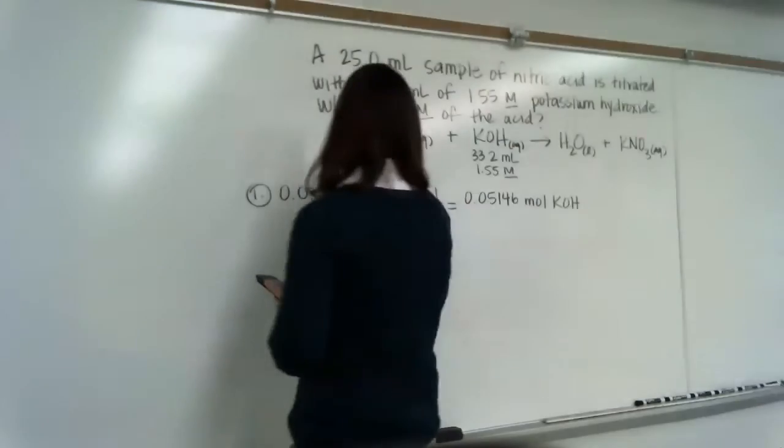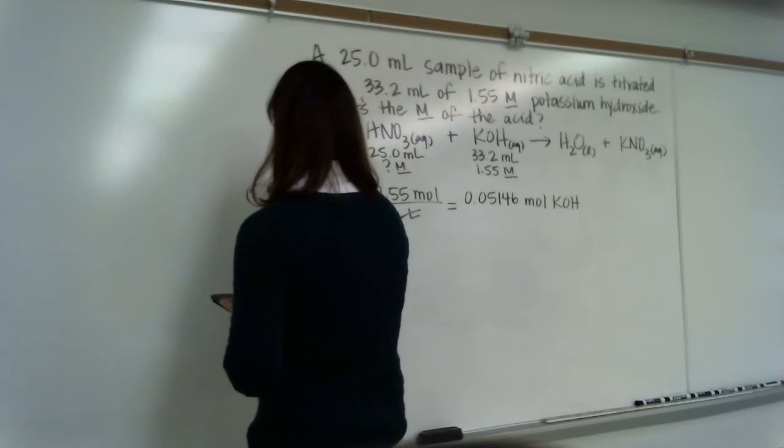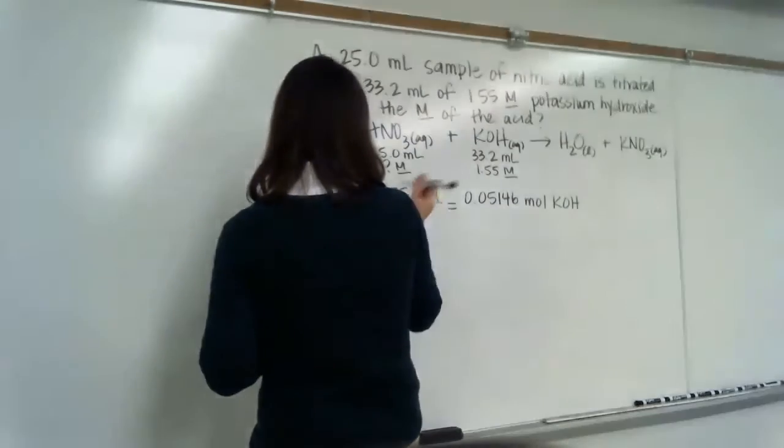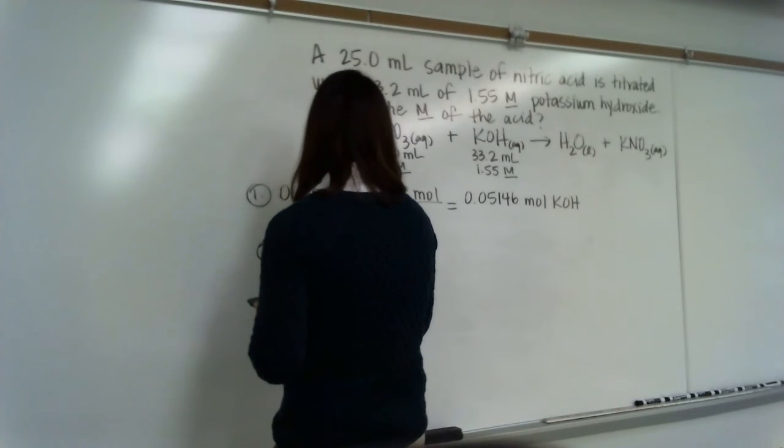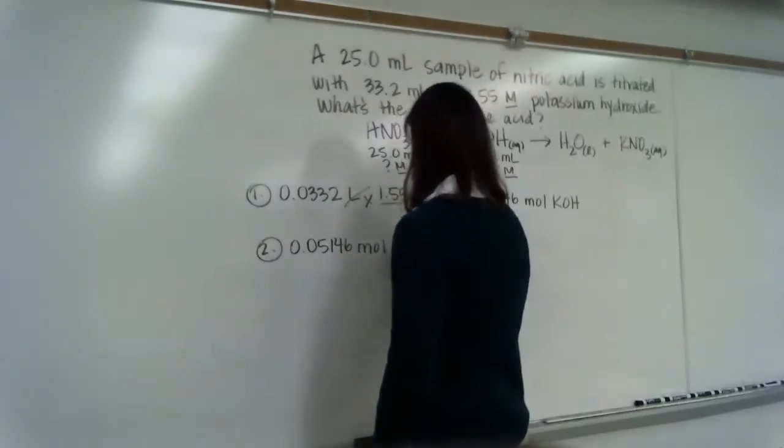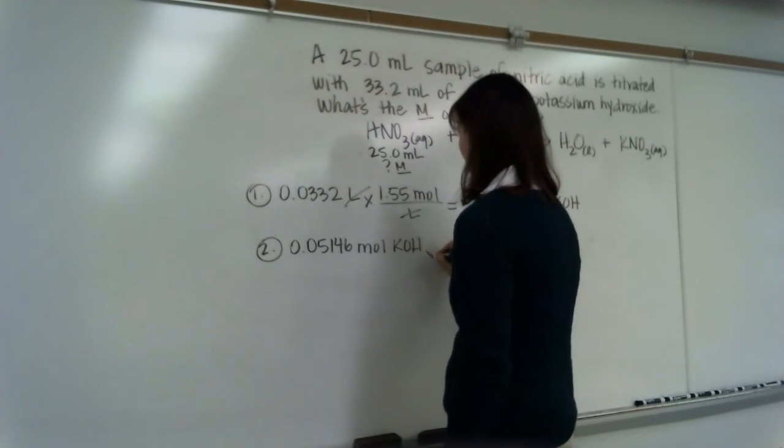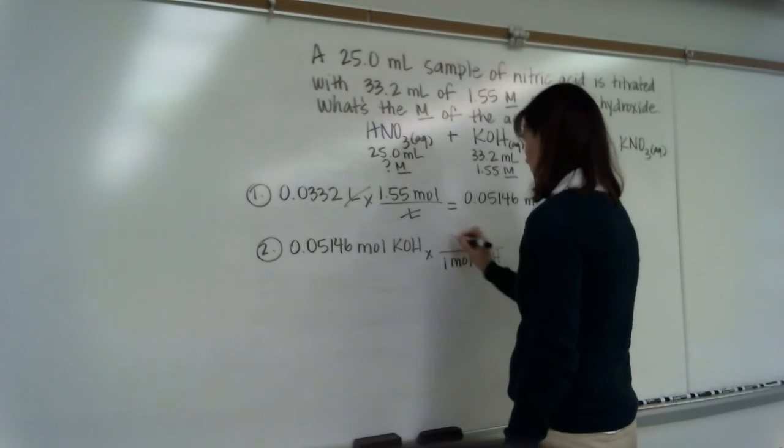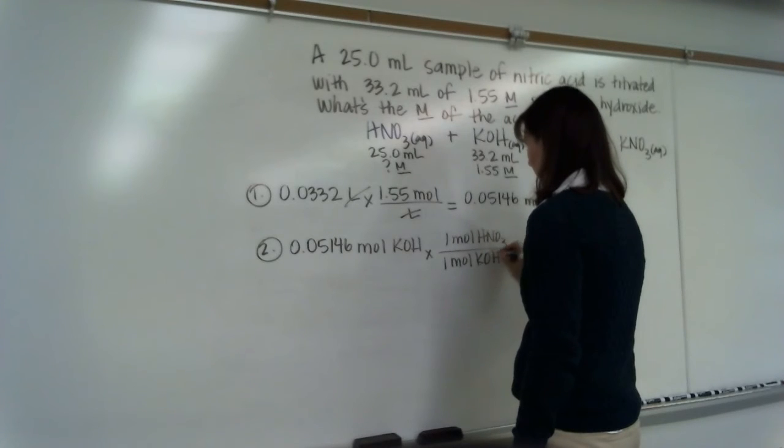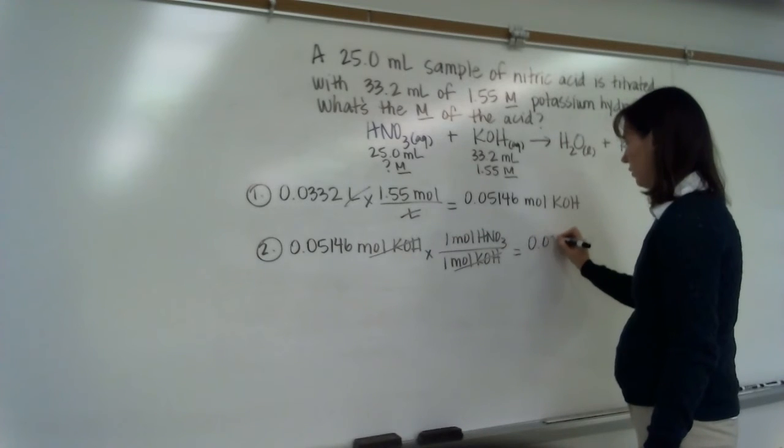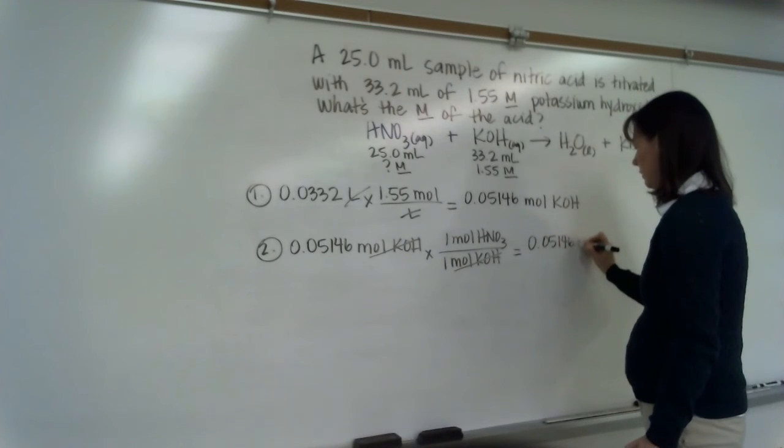All right so this is a 25 milliliter sample, we don't know its molarity, it's being titrated with a 33.2 milliliter sample and it's 1.55 molar. So first step, what's this volume in liters? 33 milliliters is 0.0332 liters times 1.55 moles per liter. So 0.0332 times 1.55 is 0.05146 moles and this is moles of potassium hydroxide. Now let's multiply by the mole ratio. It's 1 to 1 right but I still want to see the step to show me that you know what you're doing. 0.05146 moles KOH for every 1 mole KOH I consume I also consume 1 mole of HNO3. So my number doesn't change only my units so that's 0.05146 moles HNO3.